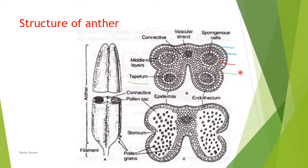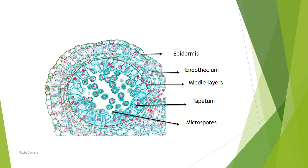To summarize the four anther wall layers and their functions: epidermis provides protection; endothecium helps in dehiscence; middle layers have no definite function and disintegrate at maturity; tapetum secretes sporopollenin and provides nutrition to the inner sporogenous cells. Inside the microsporangia, the sporogenous tissue is present from which microspore mother cells are differentiated, and pollen grains are formed.